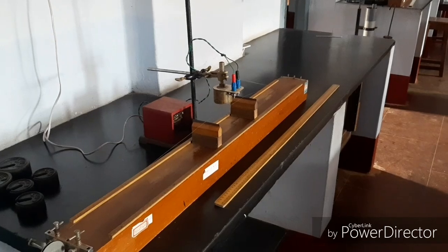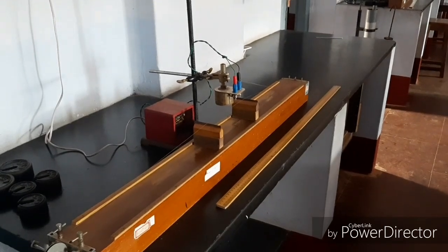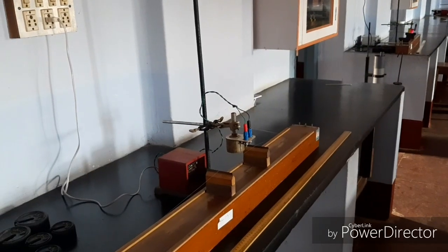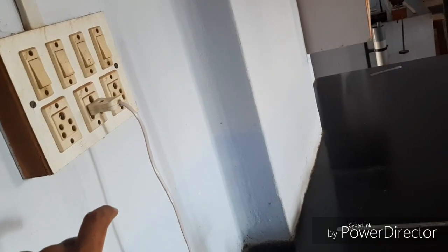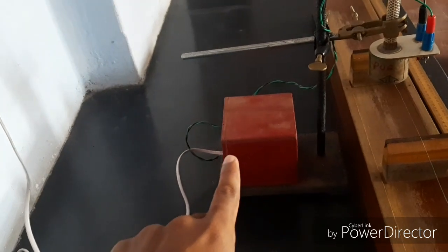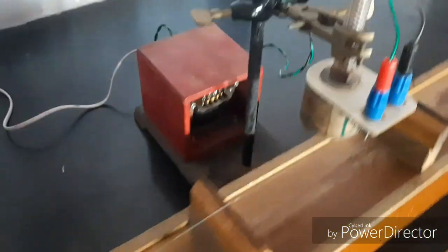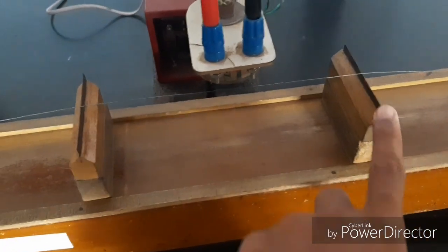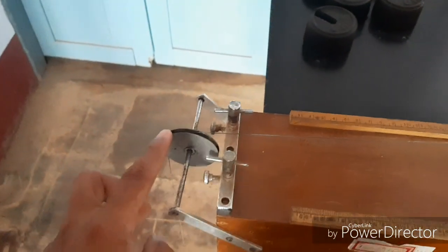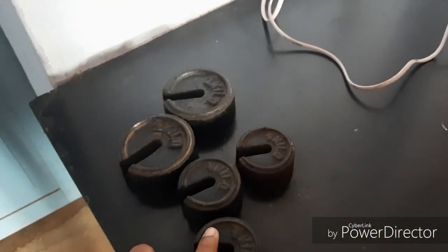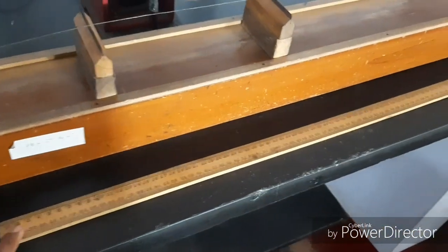The required apparatus are AC power supply and one step-down transformer and the electromagnet coil, sonometer box and these two wedges, sonometer wire, pulley and a weight hanger and different loads and one meter scale.